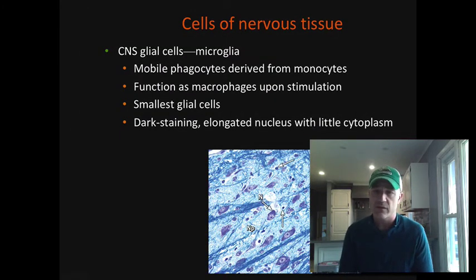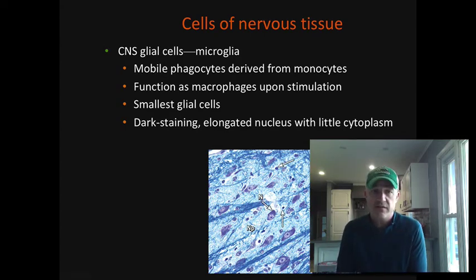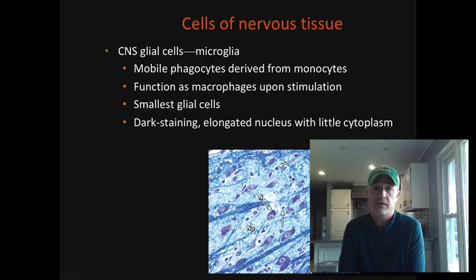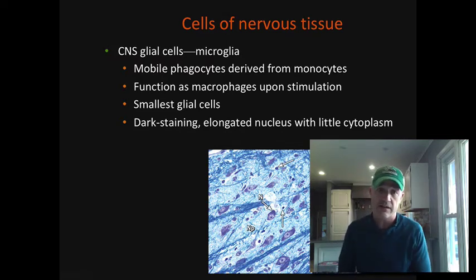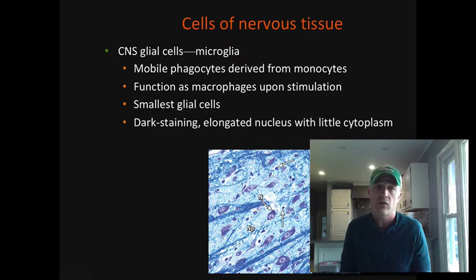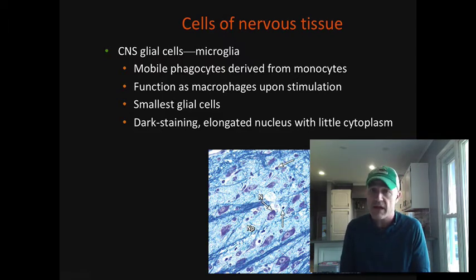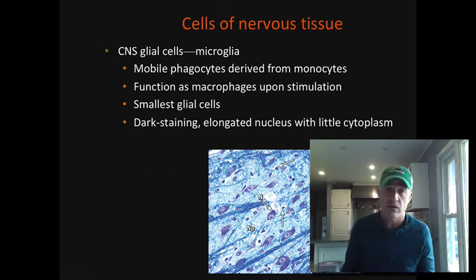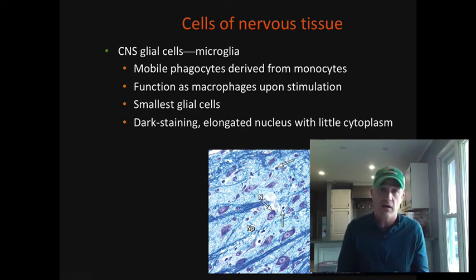Microglial cells — when you look at these it's usually just a little nucleus visible. One of the things about the CNS is that it has the blood-brain barrier, which means many blood cells cannot leave the bloodstream. Things like monocytes that would become macrophages are not capable of leaving the bloodstream and going into the nervous tissue. Because of that, we have to have our own glial cells that are resident macrophages already present there. These are derived from monocytes, and the microglial cells are these macrophages present in the central nervous tissue — basically their own army of macrophages traveling around within the nervous tissue.